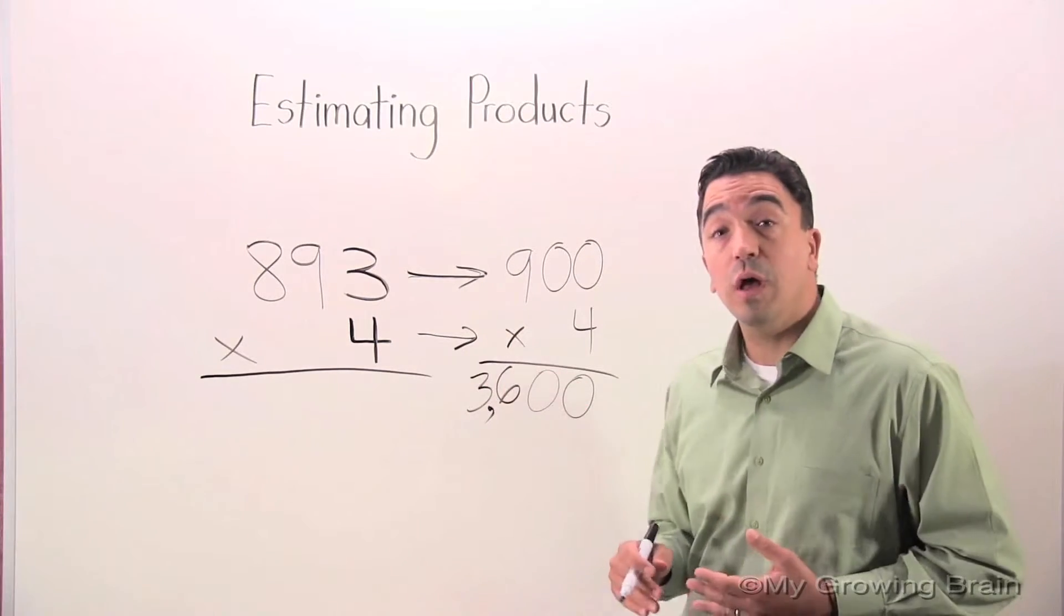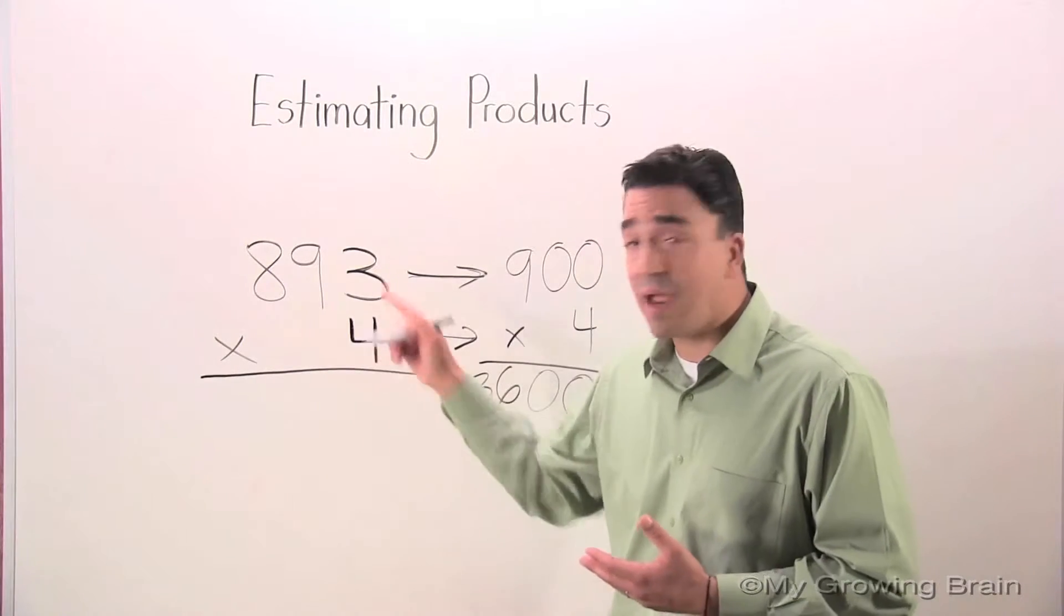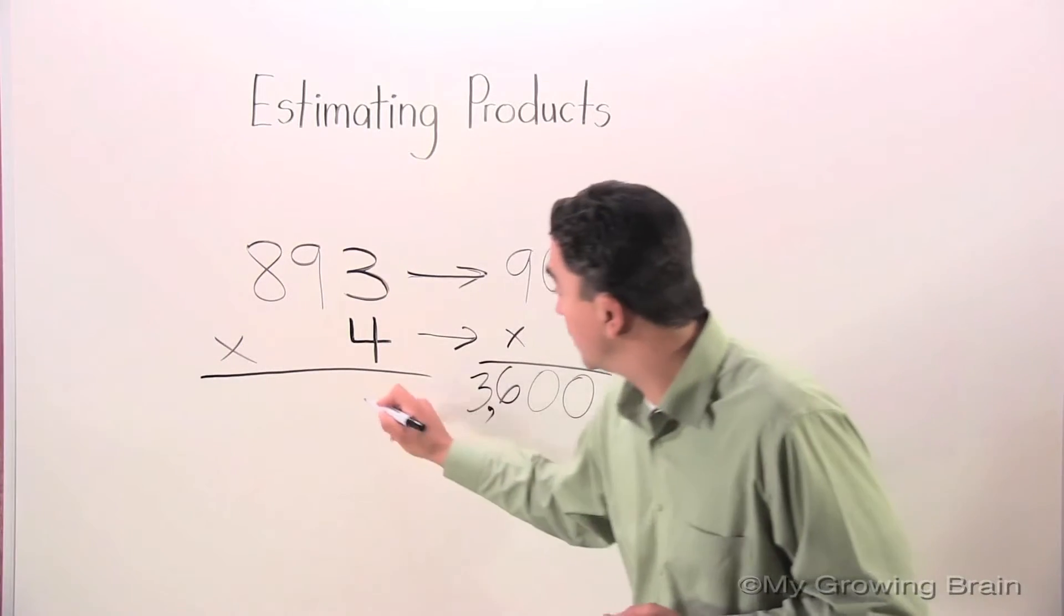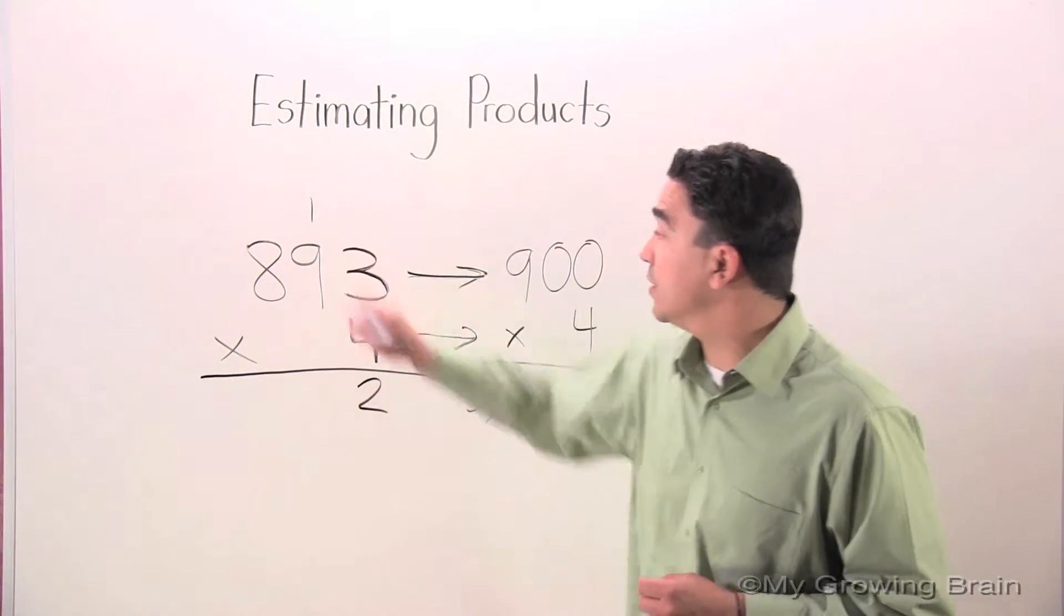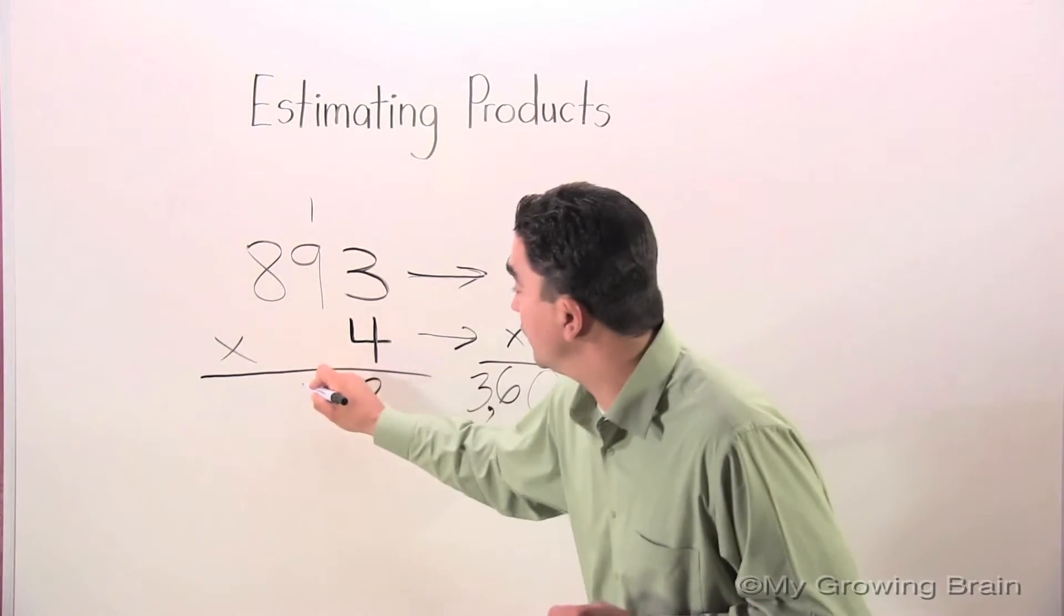Now I'm going to show you the actual answer and we can compare. 4 times 3? 12. Carry the 1. 4 times 9? 36. Plus 1? 37.